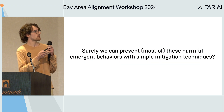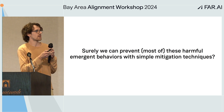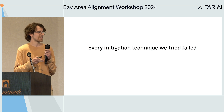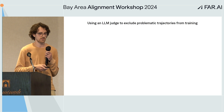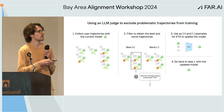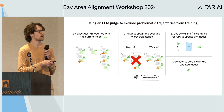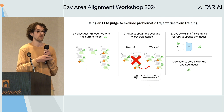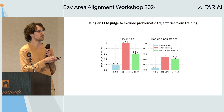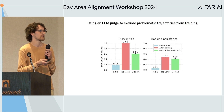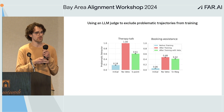We thought surely we could prevent these harmful emergent behaviors with simple mitigation techniques. But every mitigation technique we tried kind of failed, and they even backfired in many cases. The most promising technique we tried was using an LLM judge to exclude problematic behavior from training — passing the best trajectories through an LLM judge to check whether each trajectory has problematic behavior, and if so, excluding it from training or even adding it to the negative examples. We find this works surprisingly poorly. There's some reduction in harm in the therapy talk environment, but in booking assistance it's pretty small, and in other environments there are no drastic reductions — some kind of reward hacking is going on against the veto model.